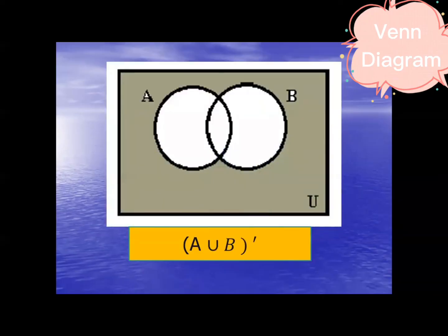This one. We all know that this is A union B. So outside this one is the complement. So A union B complement - element of the universal but not an element of A union B.